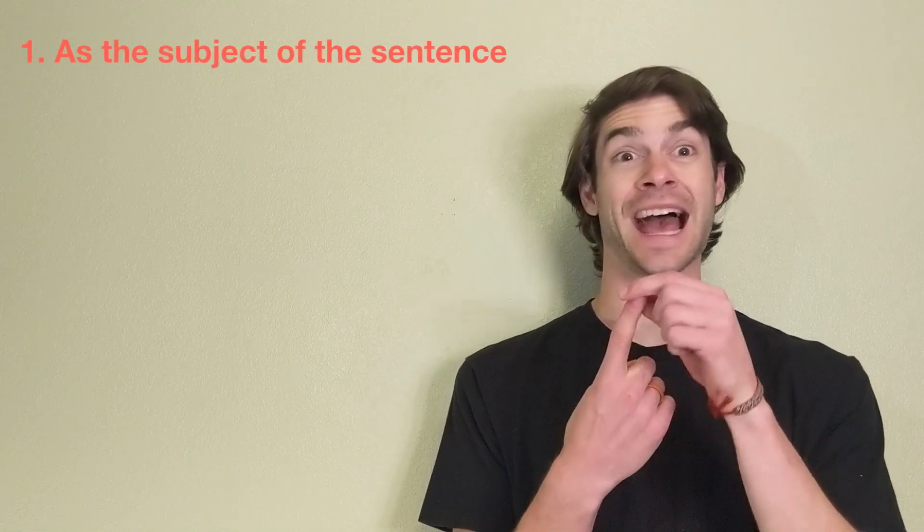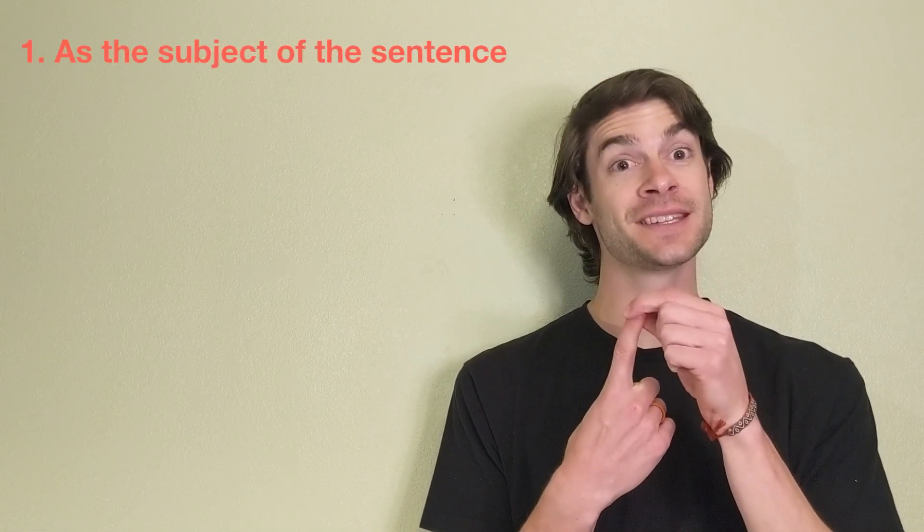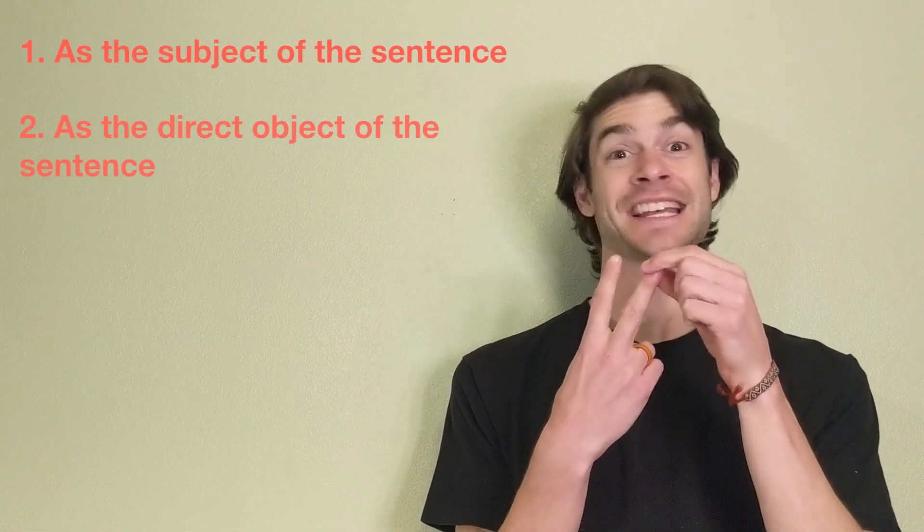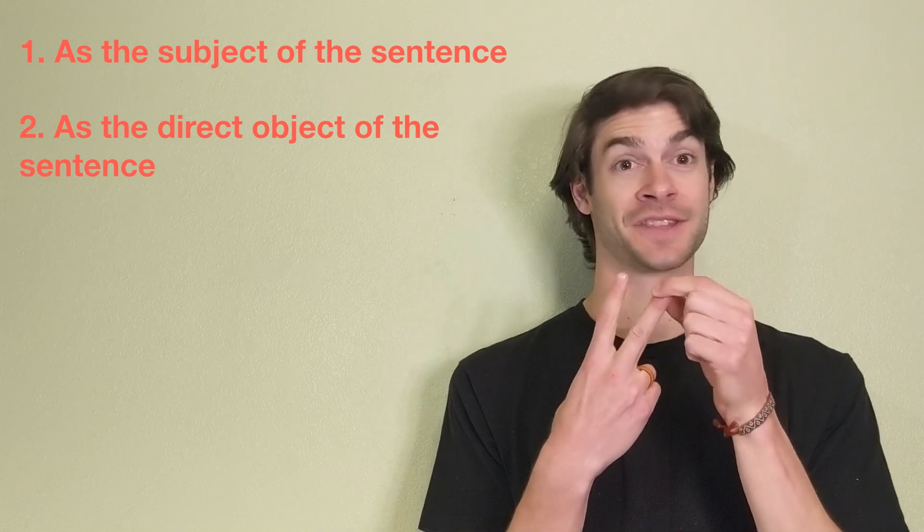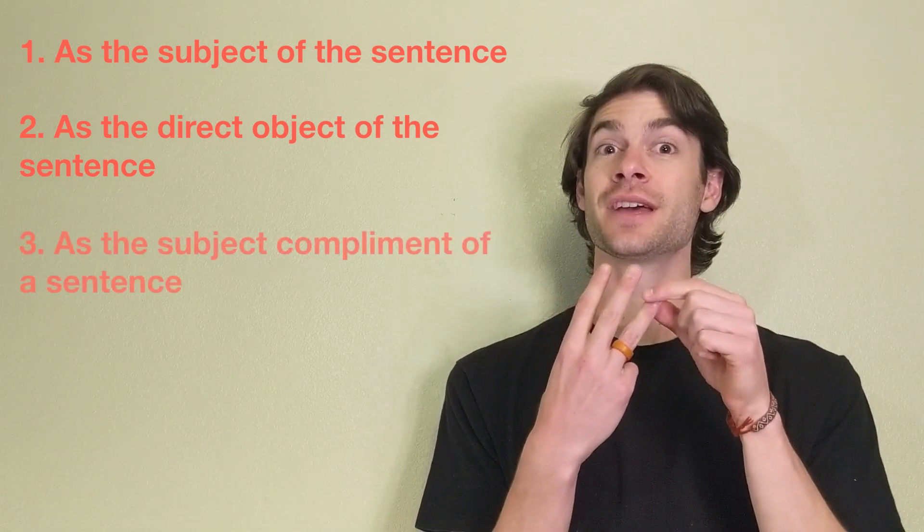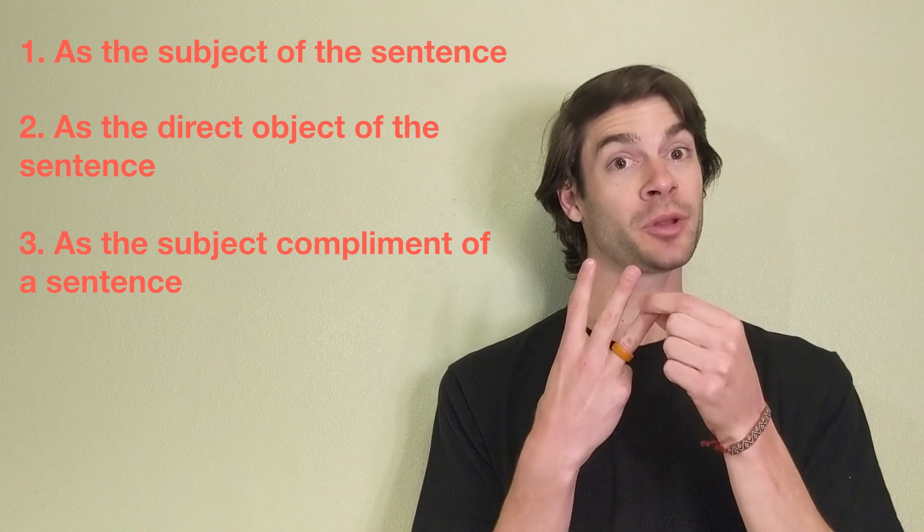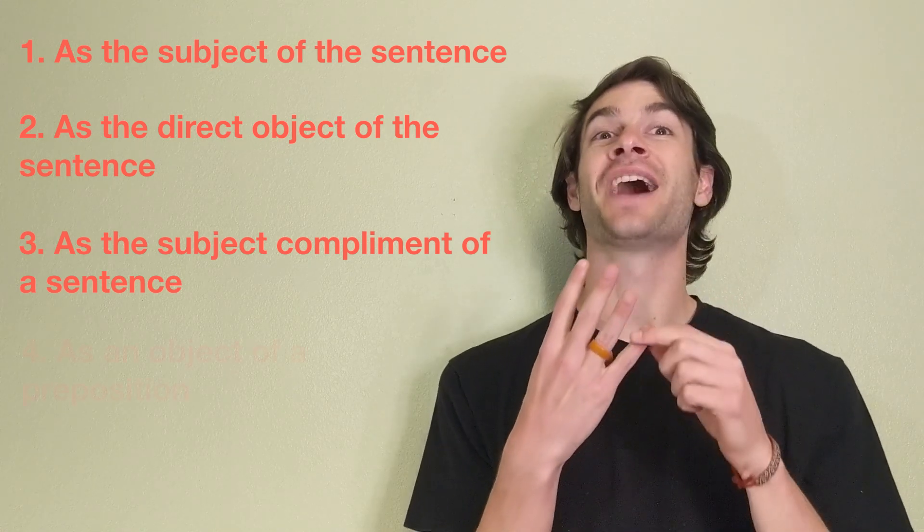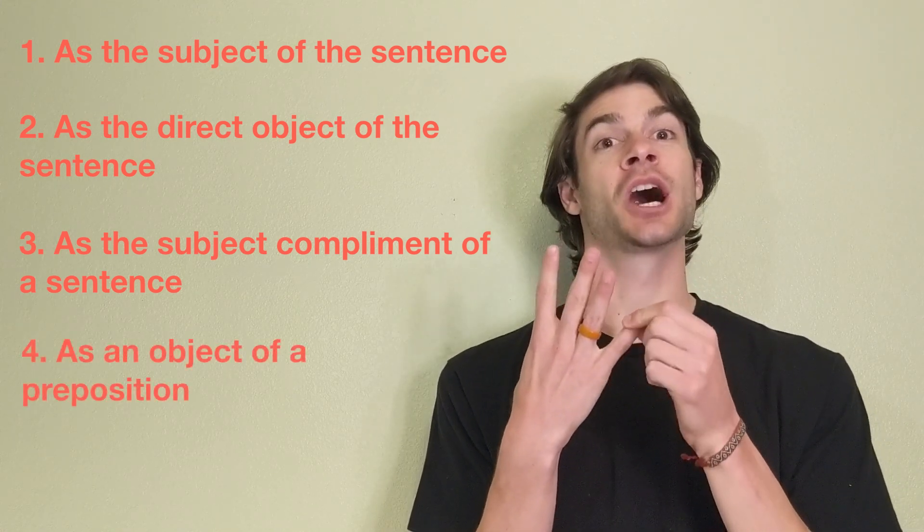There are four main ways in which we use a gerund. First, as the subject of the sentence. Second, as the direct object of the sentence. Third, as the subject complement of a sentence. And finally, as an object of a preposition.